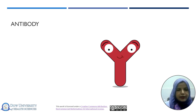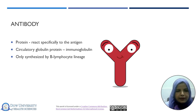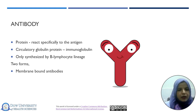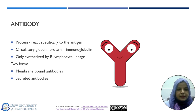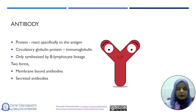Now we will move toward Antibodies. What are Antibodies? Antibodies are basically protein in nature and they react specifically to the antigen. They are circulatory globulins and are called immunoglobulins. Antibodies are mainly synthesized by the B cells — only synthesized by the B cell lineage. There are two types: they can be either membrane-bound or secreted in secretions.